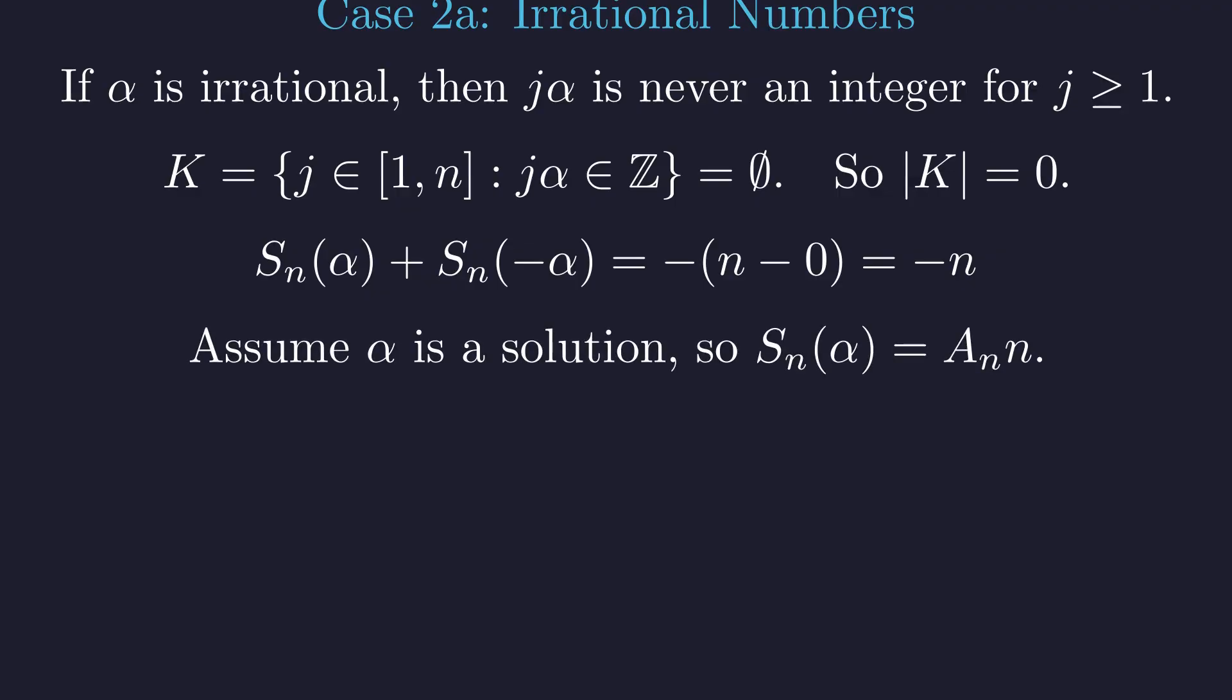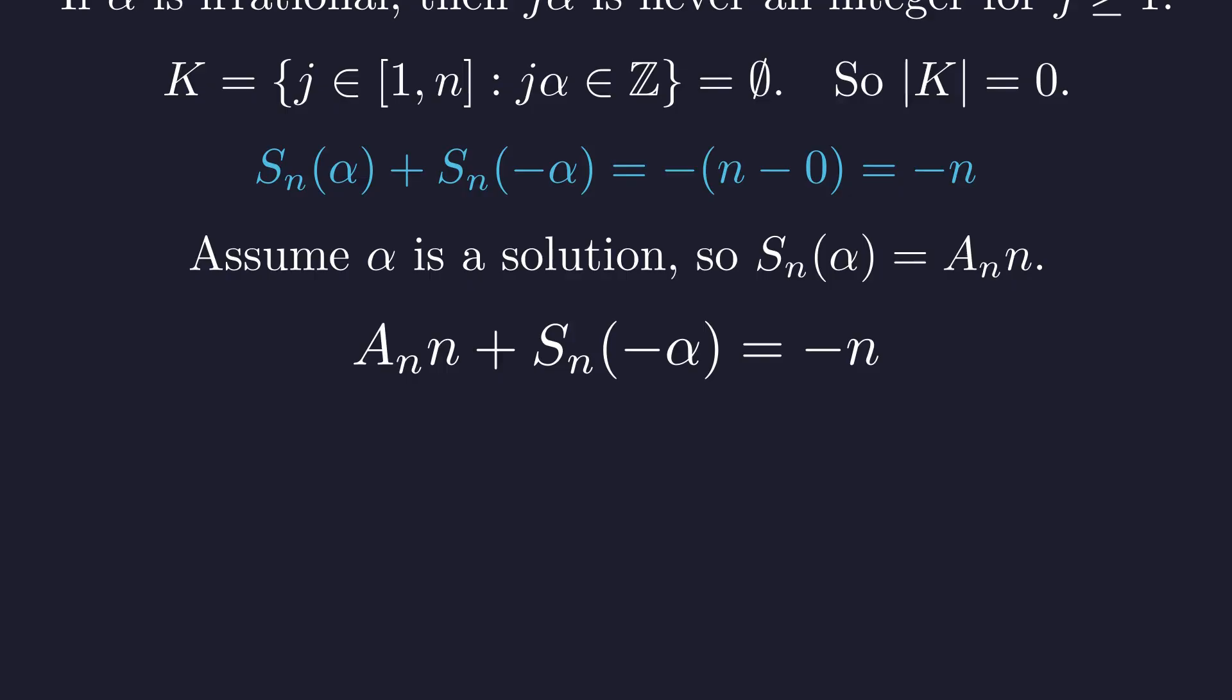Now, assume for the sake of contradiction that our irrational alpha is a solution. This means s sub n of alpha is some integer, let's call it a sub n times n. We can substitute this into our equation. This gives us a sub n times n plus s sub n of negative alpha equals negative n. Solving for s sub n of negative alpha, we find that s sub n of negative alpha is also a multiple of n. This is a useful symmetry. If an irrational number alpha is a solution, then so is its negative.